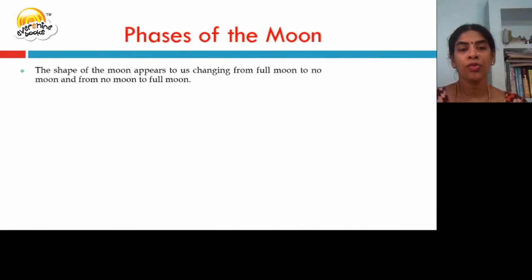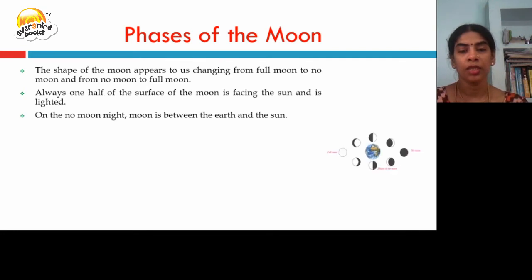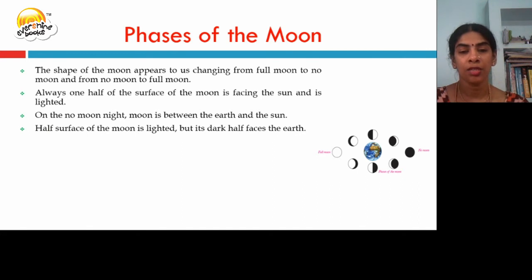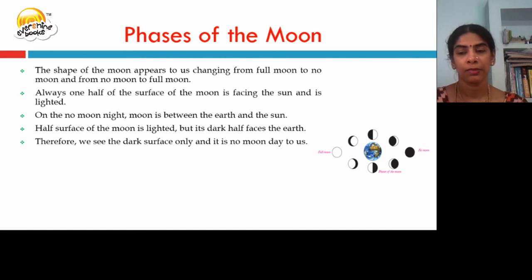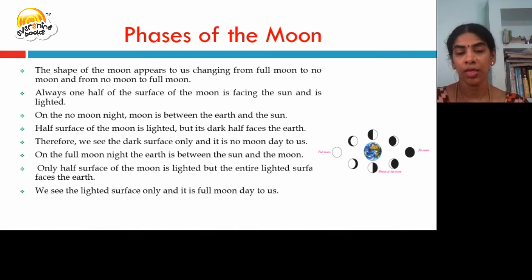The moon appears to us changing from full moon to no moon and again from no moon to full moon. Always one half of the surface of the moon facing the sun is lighted. On no-moon night, the moon is between the earth and the sun — half its surface is lighted but the dark half faces the earth, so we see only the dark surface. On the full moon night, the earth is between the sun and the moon, and the entire lighted surface faces us.